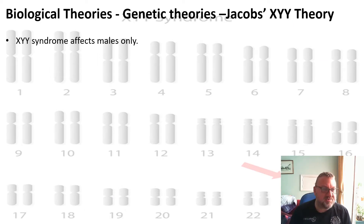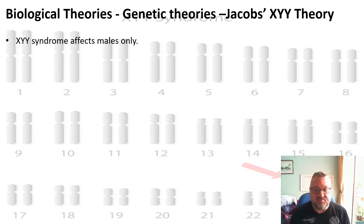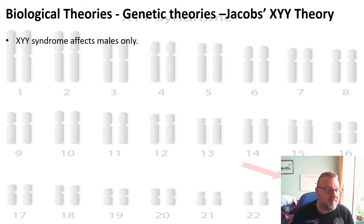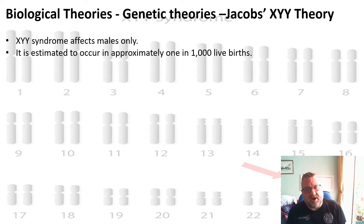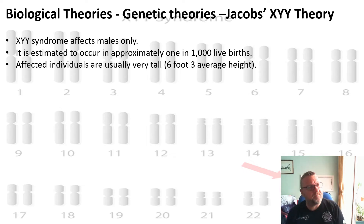XYY syndrome can only affect males, because they're the only ones with a Y chromosome — females can't have a Y chromosome. It's estimated to occur in about one in a thousand live births, so one in a thousand males might be XYY.